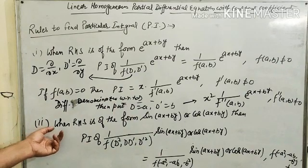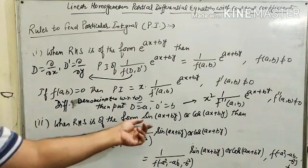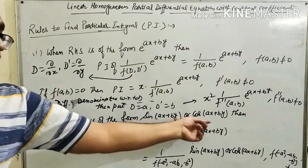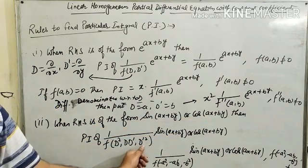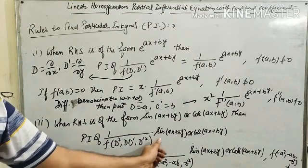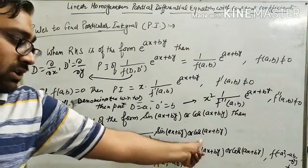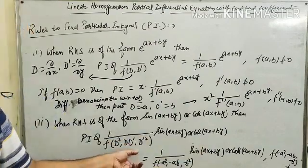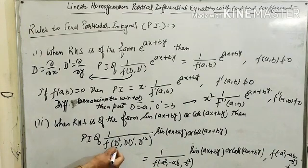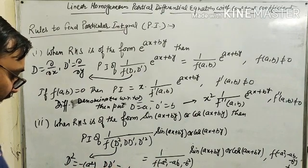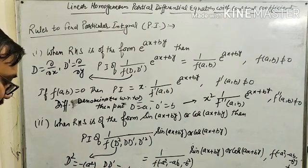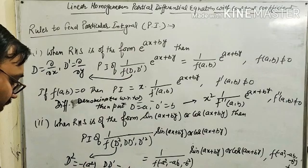The second method is when the right-hand side is of the form sin(ax plus by) or cos(ax plus by). Then 1 upon f(D², DD', D'²) of sin(ax plus by) or cos(ax plus by) can be evaluated by replacing D² with negative a², DD' with negative ab, and D'² with negative b².